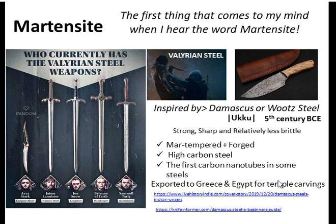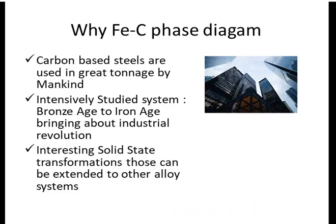Since I've been speaking a lot about steel, when I say steel I am talking about the iron–iron carbide phase diagram. Why is this phase diagram so important? If you look around yourself — constructions made with steel, bottle caps, steel water bottles, knobs, and keys — most things around you are made up of steel.